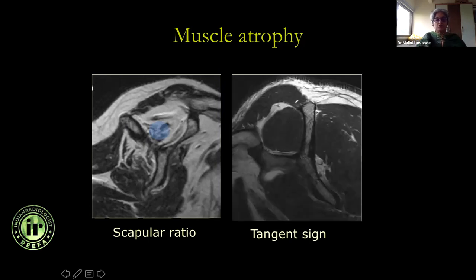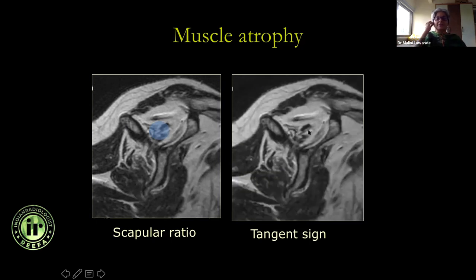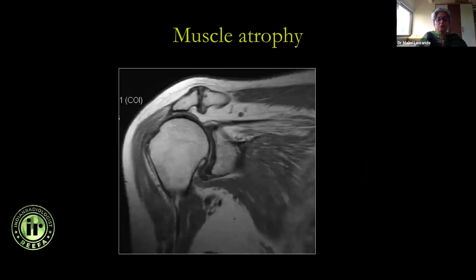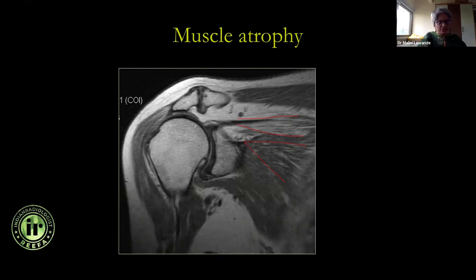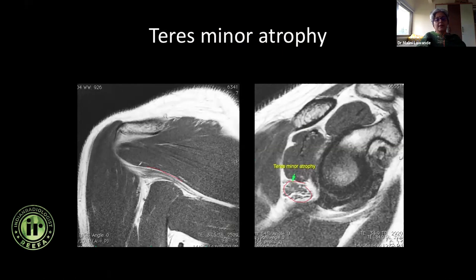There are two things: muscle volume loss, where the size is smaller but there is no fatty infiltration — with physiotherapy that can still be regained. If you draw a line along the coracoid process and the spine of the scapula, the supraspinatus should go above it. But once there is advanced fatty infiltration, that muscle is not going to recover no matter what. Remember the classifications — mild, moderate, severe — or use formal grading schemes based on how much muscle versus fat is present. Whenever there is rotator cuff muscle atrophy, consider either denervation or a tendon tear.